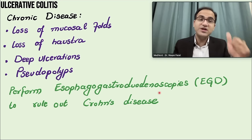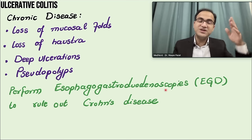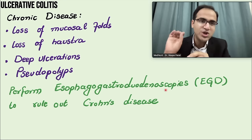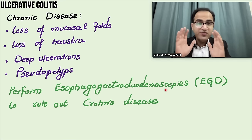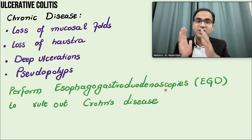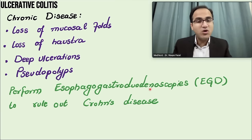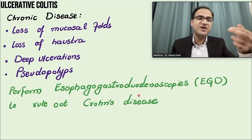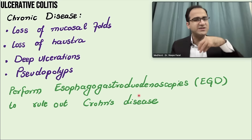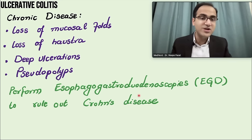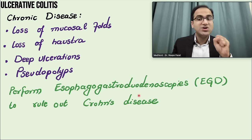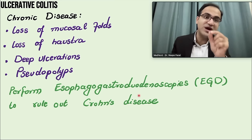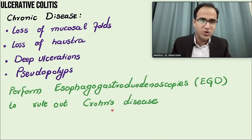Esophagogastroduodenoscopy should also be performed if you find inflammation of the ileum on ileocolonoscopy, to rule out Crohn's disease. You go from the mouth, look at the esophagus, stomach, and duodenum, and take biopsies in such cases.